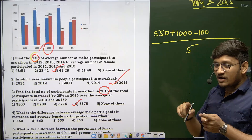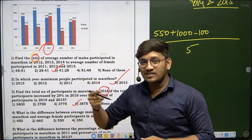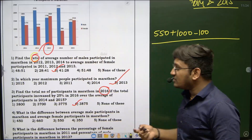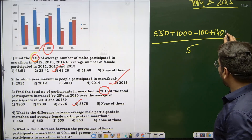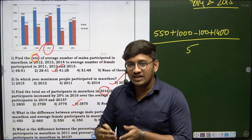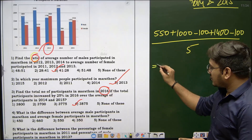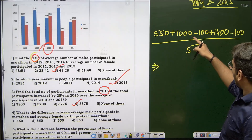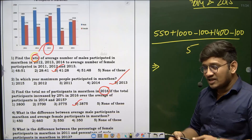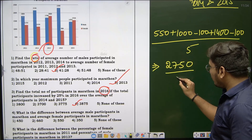In 2014, male participants are more: difference is plus 1400. In 2015, female participants are more: difference is minus 100. Now finding the average of these differences: 550 plus 1000 minus 100 plus 1400 minus 100 = 2750, divided by 5.